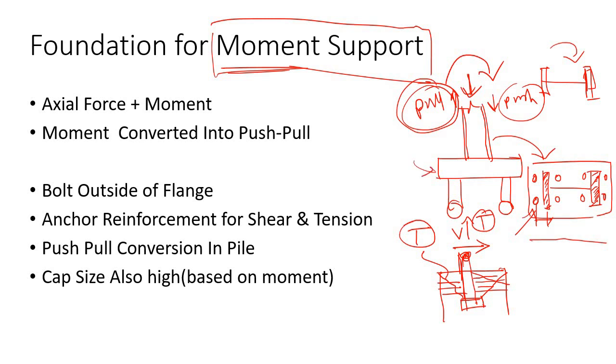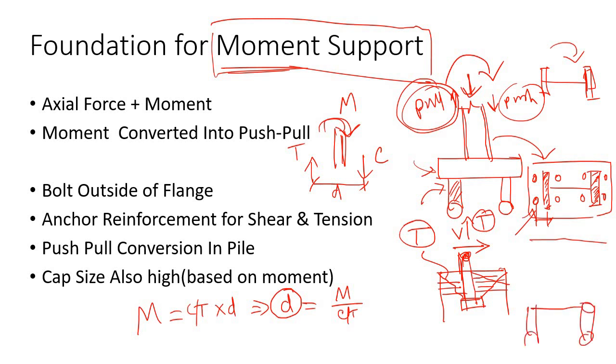Last one is your pile cap. This moment is ultimately converted into a tensile force and compressive force. If the lever arm is d, you can say that this moment is C or T times d. Indirectly, the lever arm required to transfer this moment is M divided by compressive or tensile force. If the compressive or tensile force carrying capacity is fixed for these piles, based on that you need a higher d or higher distance between the piles based on the magnitude of the moment.